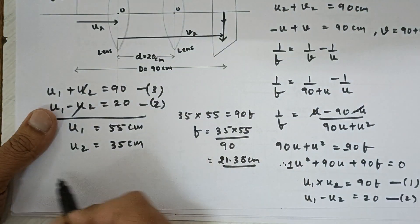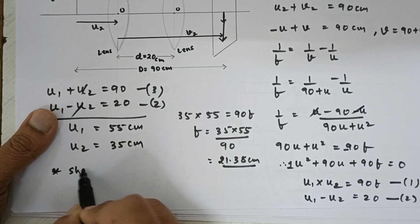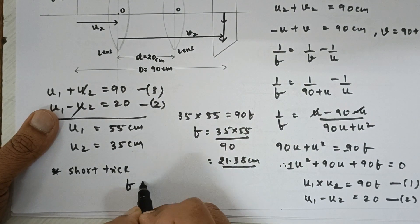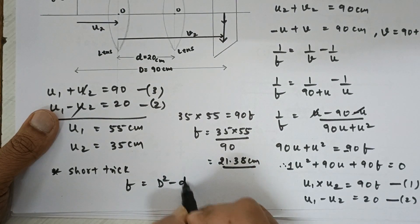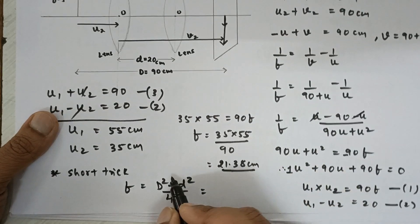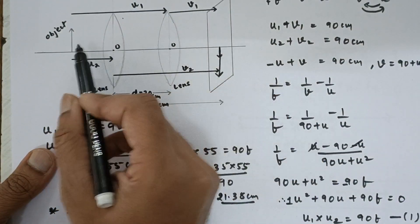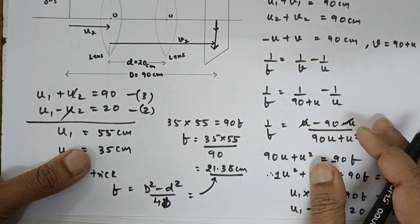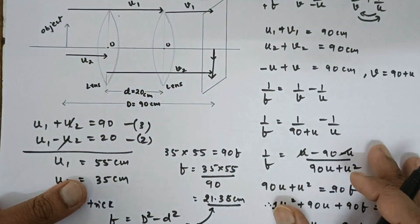So, this is actually known as displacement method to find the focal length. Now, another way that is the short trick method directly you can use focal length is equal to d square minus small d square upon 4d sorry capital D. This capital D is this distance. So, if you plug in all the values you will again get the same answer over here. This is the short trick and this one is the long method.